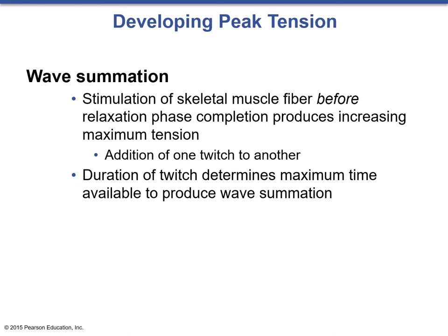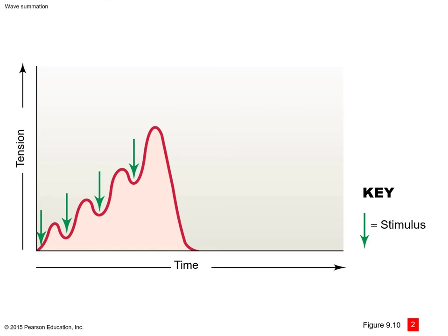We've talked about contracting muscles, twitches, and the muscle fiber length-tension relationship. Individual muscle fibers contract all-or-none but can't produce enough force to move a load with a single twitch — we have to combine them via summation and tetany. Wave summation is our first method: stimulation of the skeletal muscle fiber before the relaxation phase is completed produces increasing maximum tension by adding one twitch to another. The duration of the twitch determines the maximum time available for wave summation.